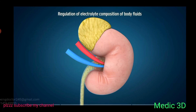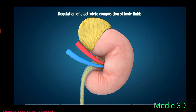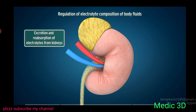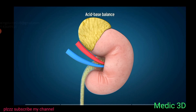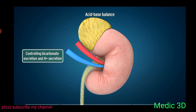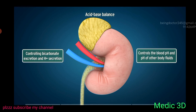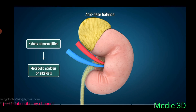The composition of electrolytes in ECF is mainly regulated by the kidney. Excretion and reabsorption of electrolytes from kidneys directly influence their concentration in ECF. Kidneys also contribute significantly to acid-base balance by controlling bicarbonate excretion and H+ secretion, thus controlling blood pH and the pH of other body fluids. Therefore, kidney abnormalities may cause metabolic acidosis or alkalosis.